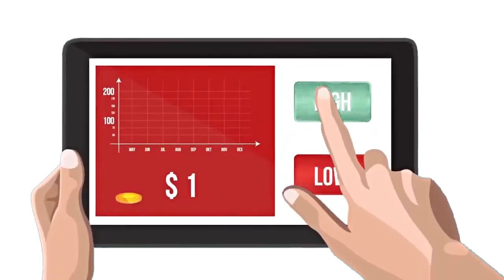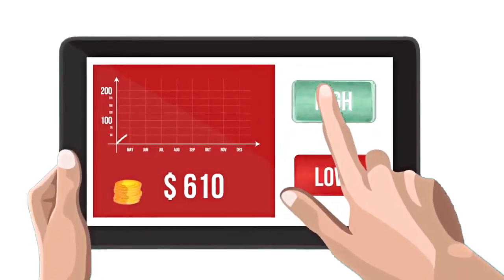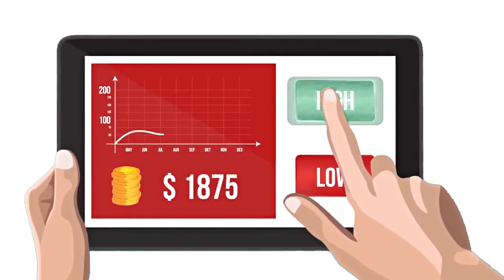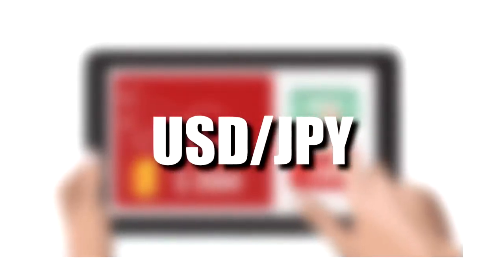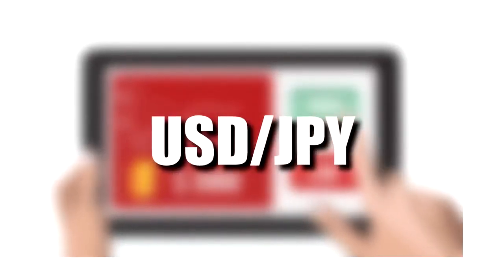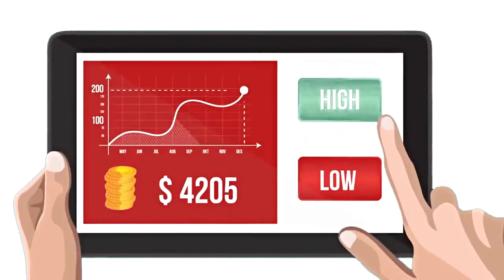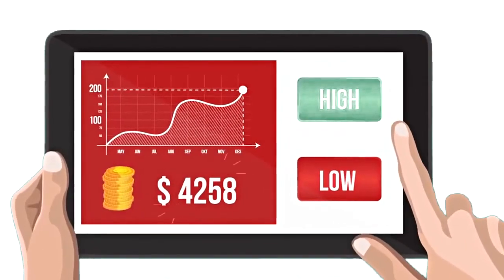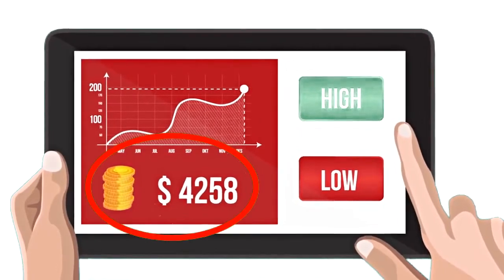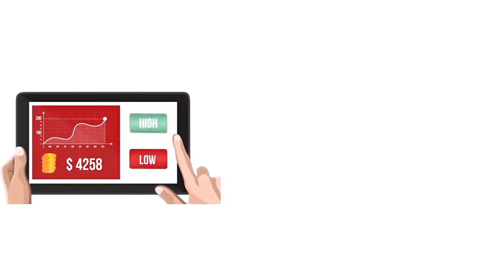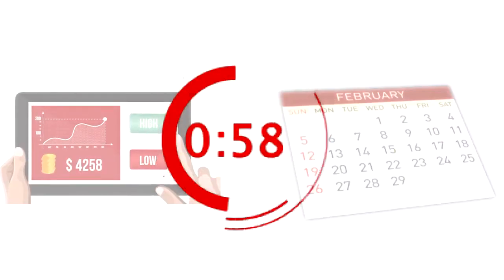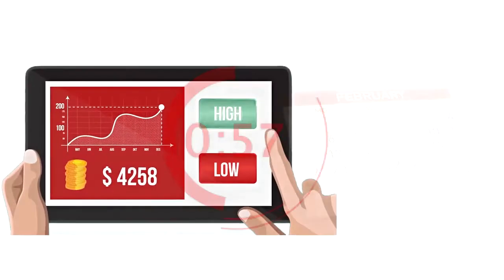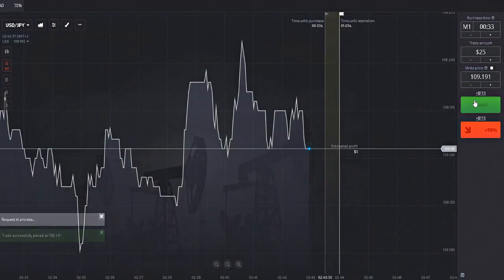With binary options, there are only two possible outcomes: either the price of your traded asset — in this example, the USD versus the JPY — finishes above a specific entry price at a specific date in time, or it doesn't.